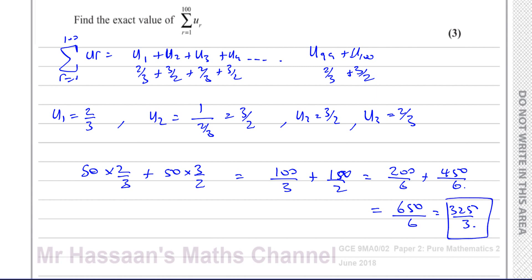They're asking us to leave an exact value, so don't round it or write it as a decimal. You can write it as a mixed number if you want, but that's fine. 325 over 3 in its simplest form, that's the exact value of this expression. So that's important.